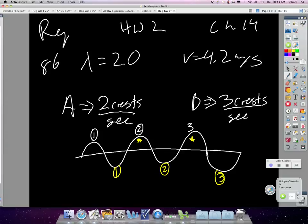Okay, so both are correct. It's just one person saw two crests but three troughs. This person saw three crests but two troughs. They saw the same thing, just shifted by like pi.